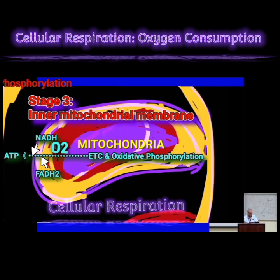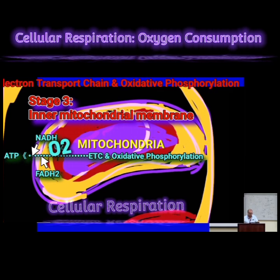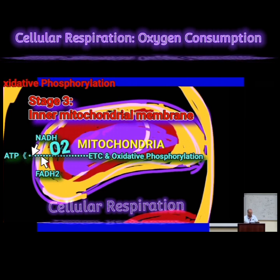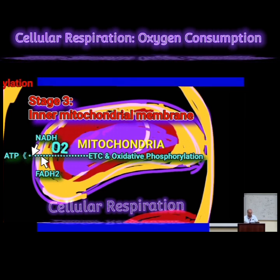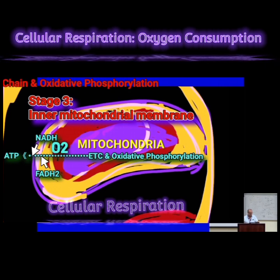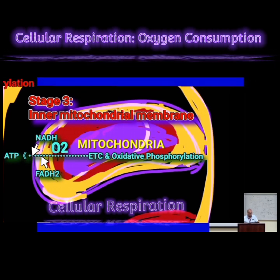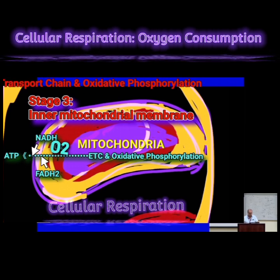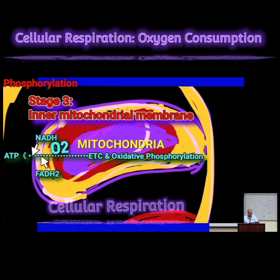Importantly, NADH and FADH2 produced by pyruvate dehydrogenase, the TCA cycle, and fatty acid beta oxidation are released in the mitochondrial matrix and would have direct access to the electron transport chain components in the inner mitochondrial membrane.